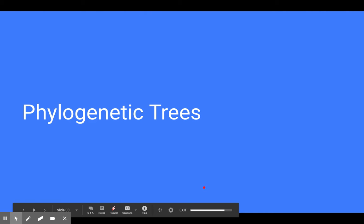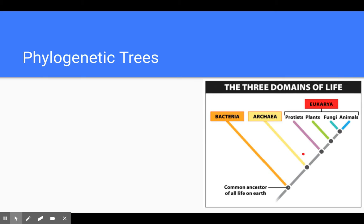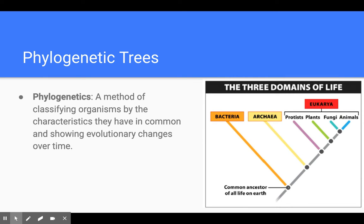Alrighty ladies, welcome to our phylogenetic tree note video. So the first thing I want to do is just go ahead and do a couple of definitions. So phylogenetics is a method of classifying organisms by the characteristics that they have in common and showing evolutionary relationships over time. Now evolution is technically unit four, but we're kind of starting to lead into that.